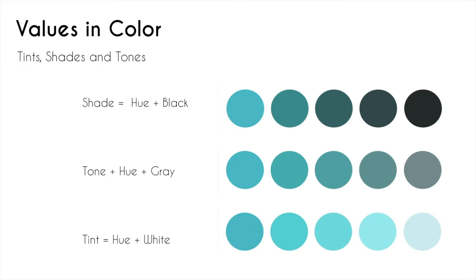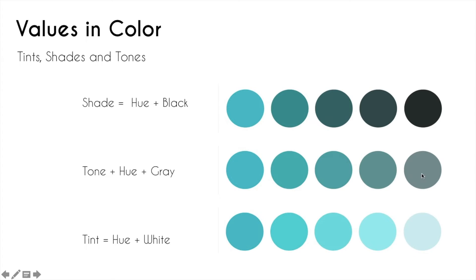Now beyond color harmonies, we want to talk about values in color. Values is the range of black to white, and we've been doing just black to white. Now let's talk about color values — we have specific names for them. If you have a hue — and hue is just a fancy word for a color, the base color — so we have blue-green, that's our hue. Now if you start adding black, you'll eventually get really dark, and that's called a shade. Any time you add black to a color, it's called a shade. Shade is like a shadow, so it's an easy way to remember: shade is a hue plus black. When you add gray to a hue, that's called a tone — like when you tell a friend to tone it down. You subdue a color by adding gray. And then tint — you add white, so you lighten a color by adding white.